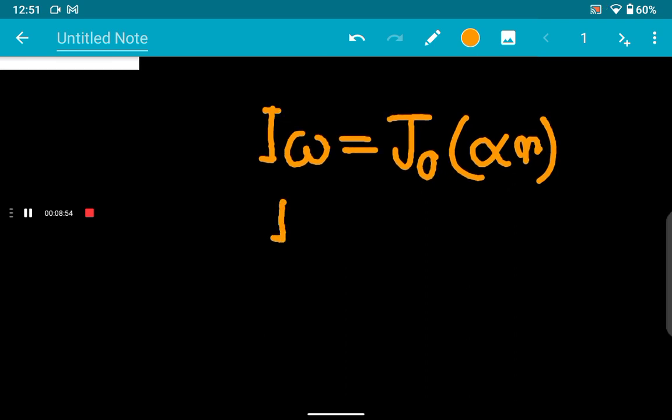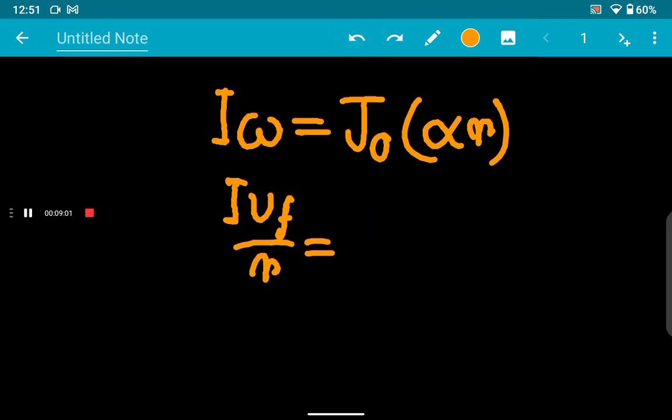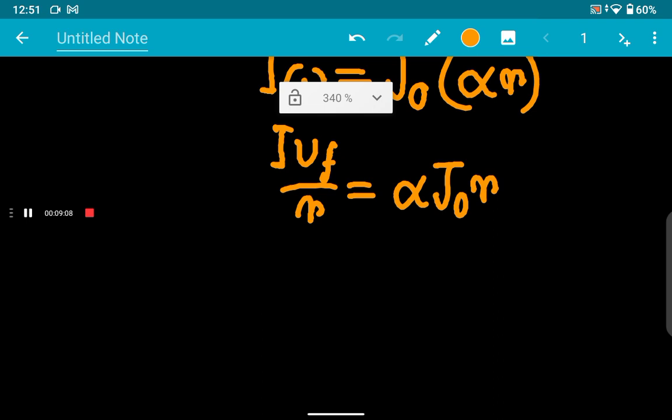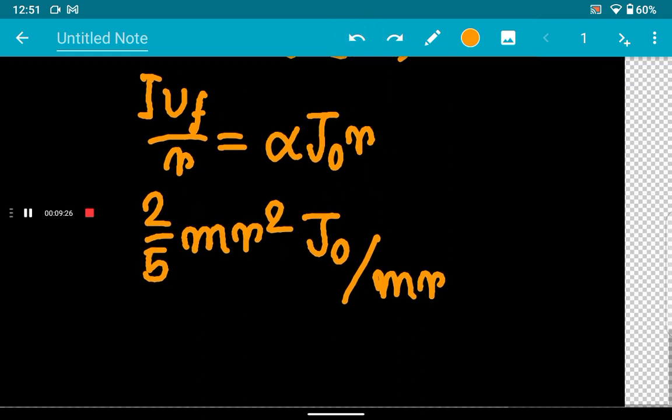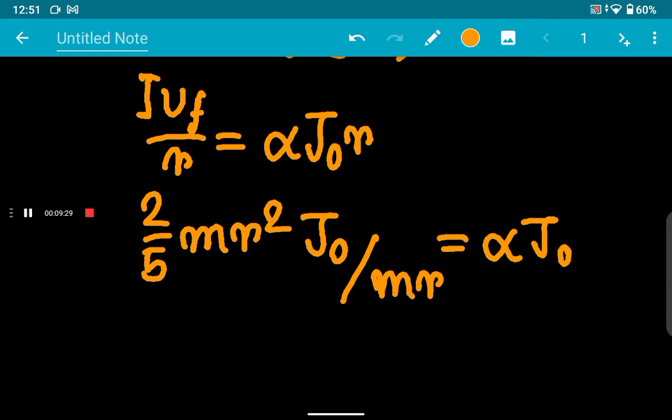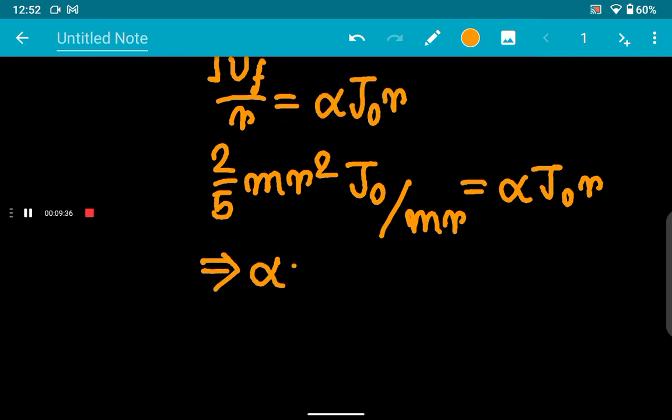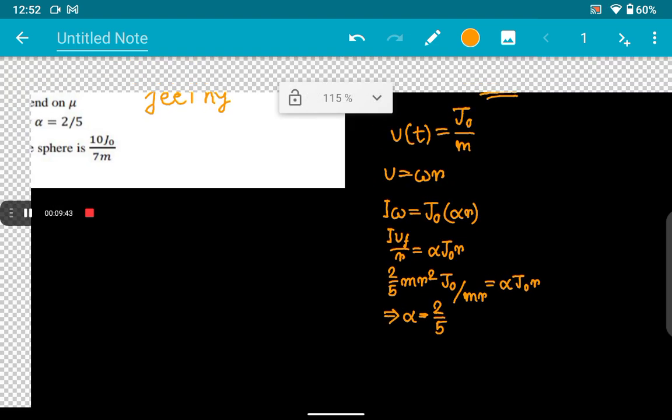What was ω? Omega was vf divided by r. This was α into J₀r. What was I? For a solid sphere, I is 2/5 mr². What was vf? vf was here nothing but J₀ by m, and J₀ by mr because there is an r in the denominator. This is α into J₀r. All of the things get cancelled, and from this we get that α is actually equal to 2/5 when the sphere begins to roll without slipping. So option C is indeed correct.